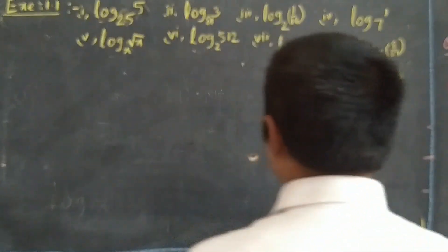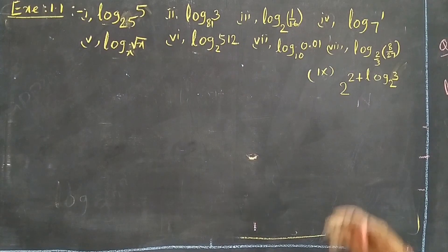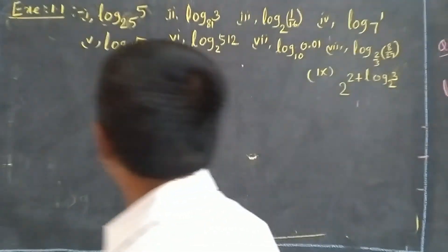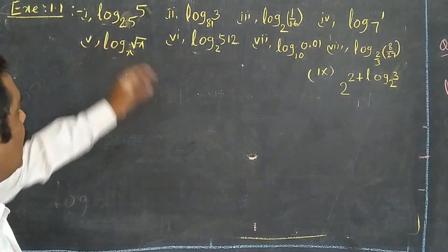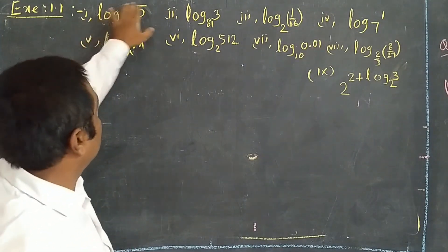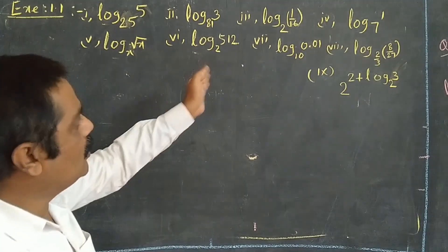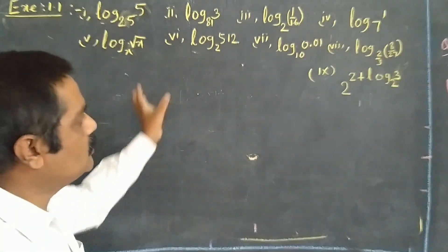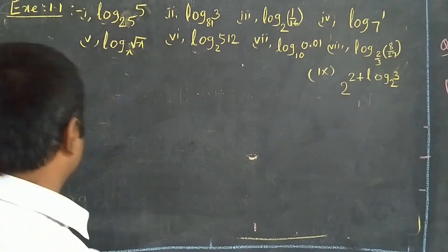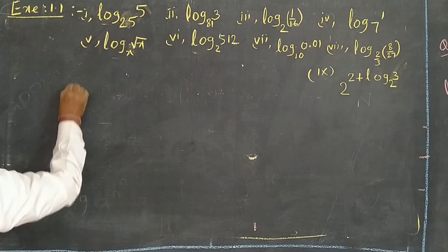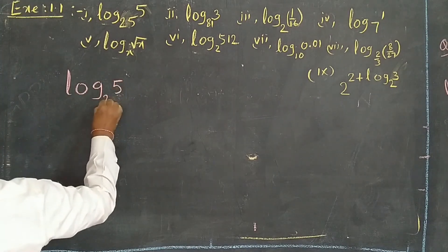This is Exercise 1.1. There are 9 problems in the first part. These are all problems asking us to determine the values — we have to find the value of log 5 base 25, log 3 base 81, log(1/16) base 2. These are all problems we have to do. I will explain some problems and the remaining problems you have to do.